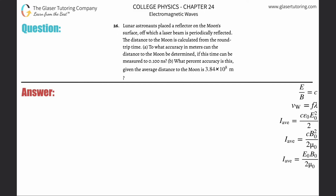Number 26. Lunar astronauts placed a reflector on the moon surface off which a laser beam is periodically reflected. The distance to the moon is calculated from the round-trip time. Letter A. To what accuracy in meters can the distance to the moon be determined if this time can be measured to 0.1 nanoseconds?